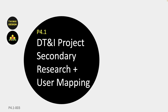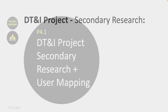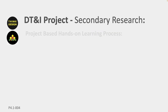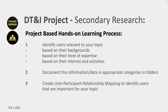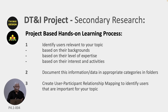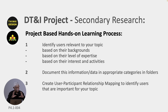We will be continuing with the secondary research and then doing the user participant mapping. First, identify users relevant to your topic based on their backgrounds and level of expertise. Also look at their interest and activities, and document this information in appropriate categories. Create a user participant relationship mapping to identify the different users that are important to your topic.